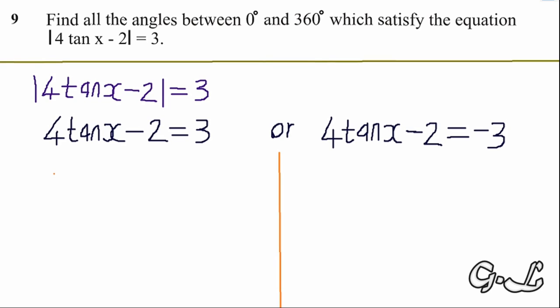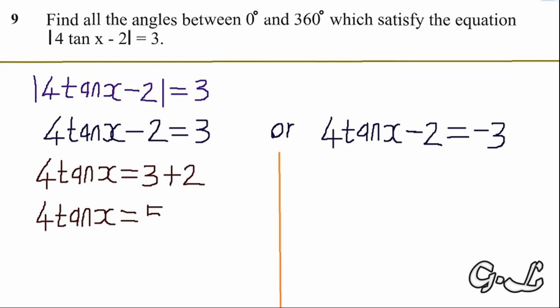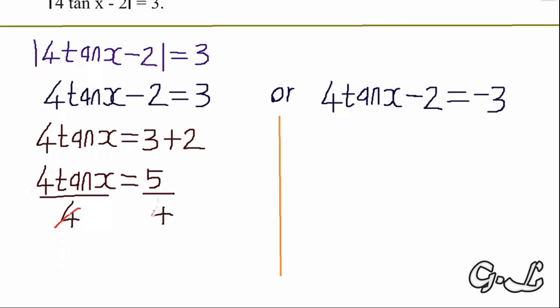Starting with Case 1: 4 tan x minus 2 equals 3. We move negative 2 to the right-hand side, giving 4 tan x equals 3 plus 2, which is 5. We then divide both sides by 4: 4 divided by 4 gives 1, so tan x equals 5 over 4.